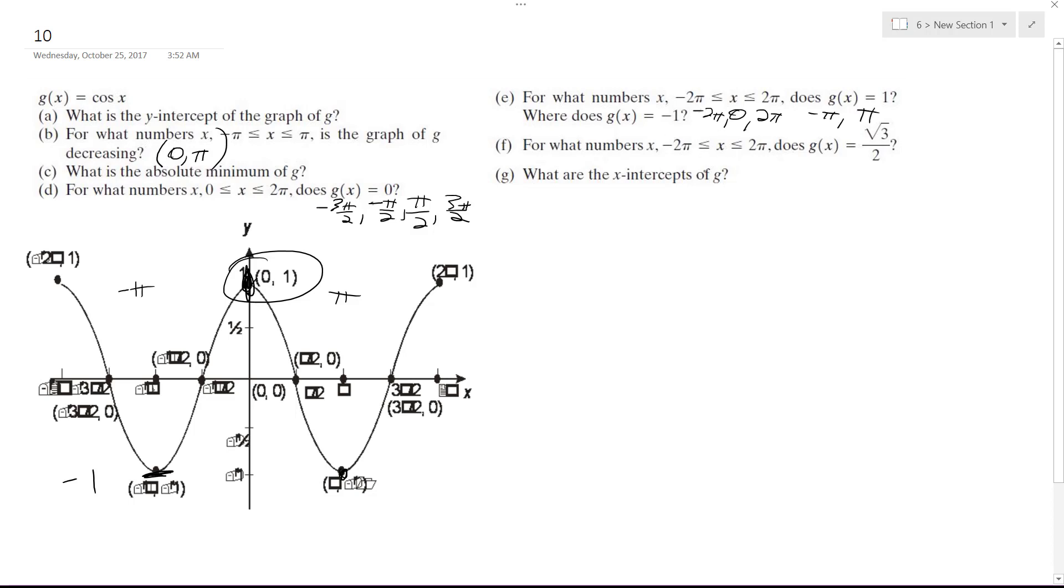For what numbers x from negative 2π to 2π does g(x) equal √3/2? √3/2 is cosine, so √3 and then 2. I know π/6 and then, not 5π/6, 11π/6. Those are two that give me √3/2. And the other ones are going to be negative 11π/6 and negative π/6.